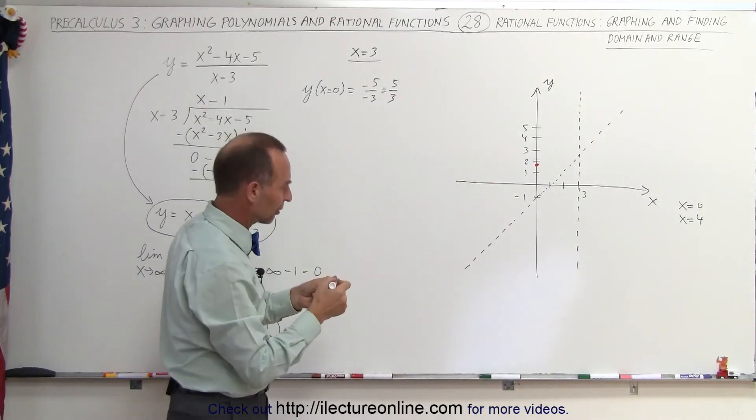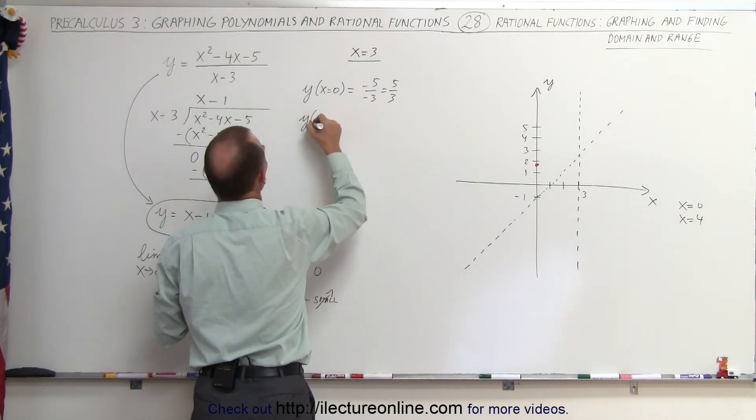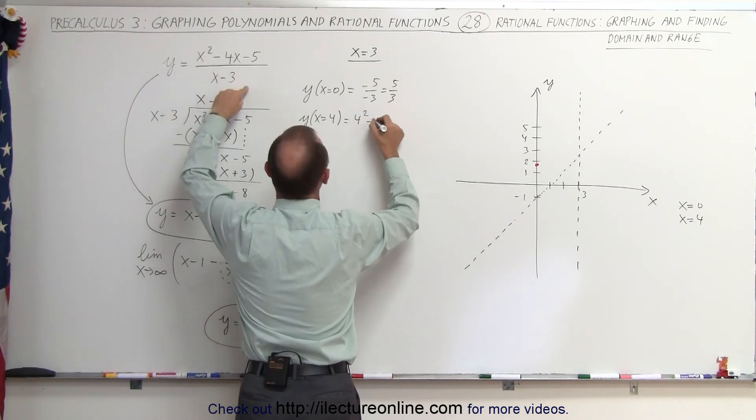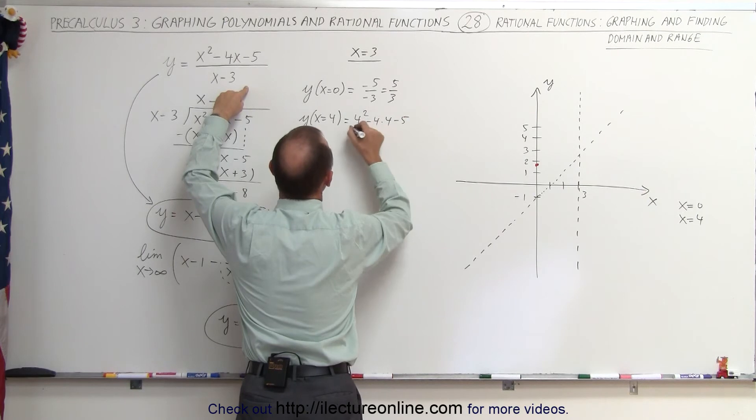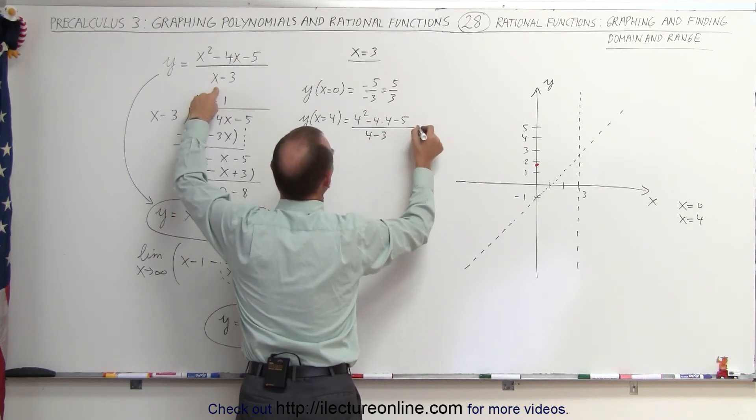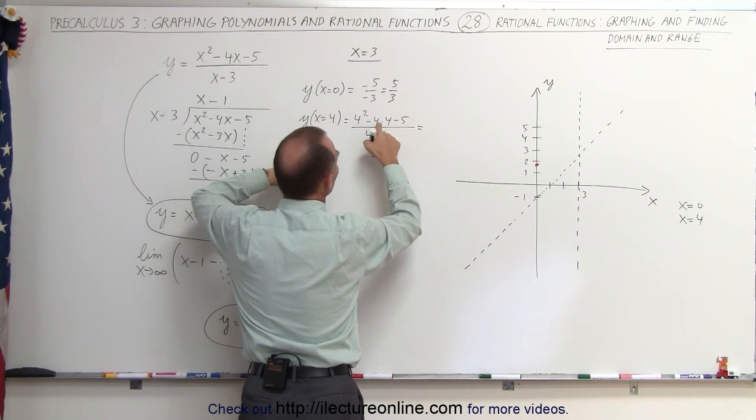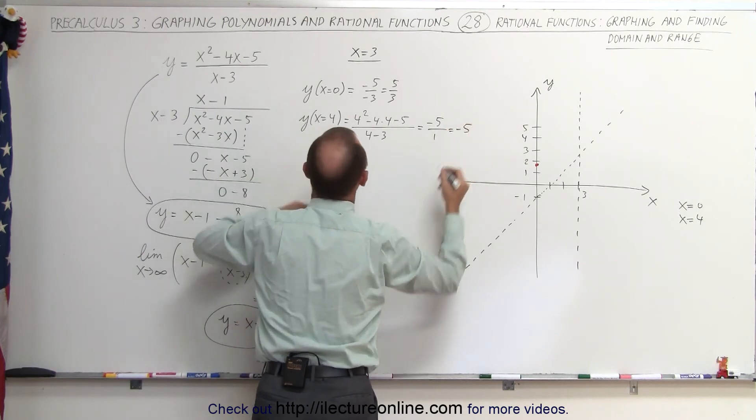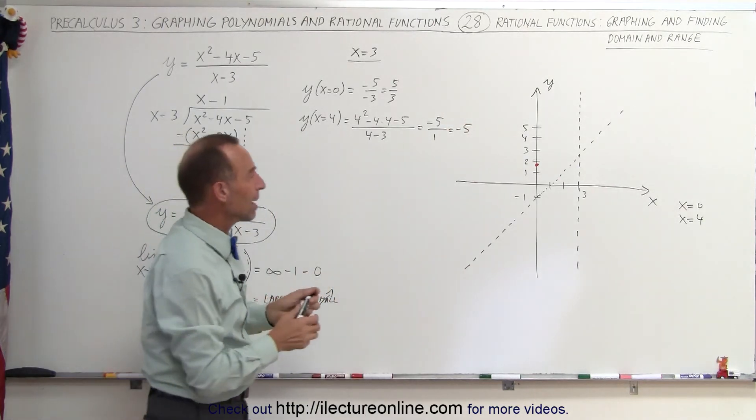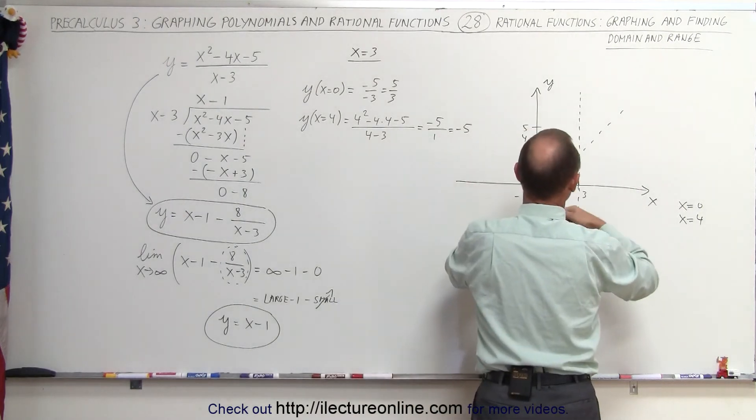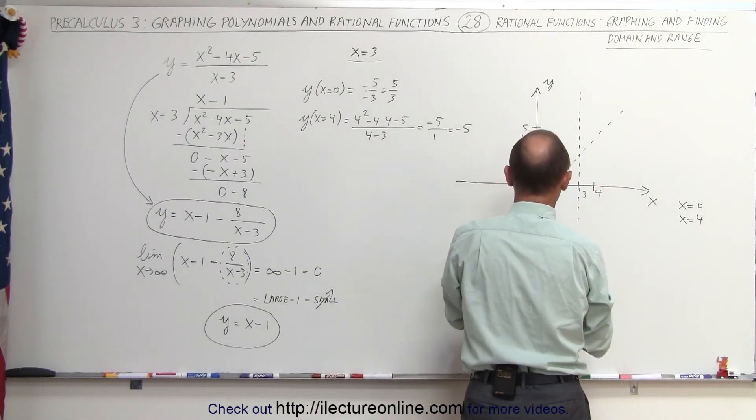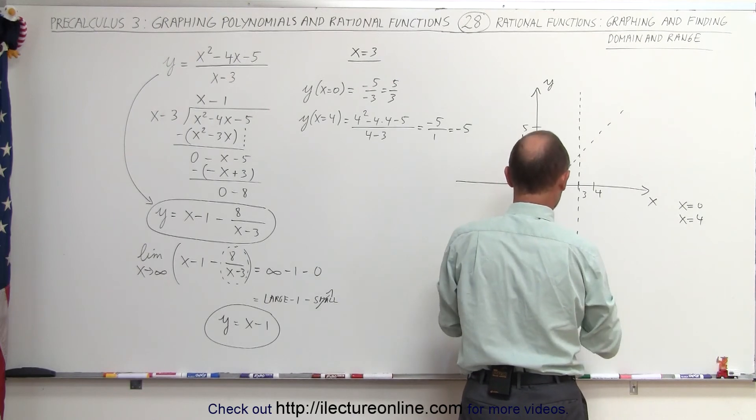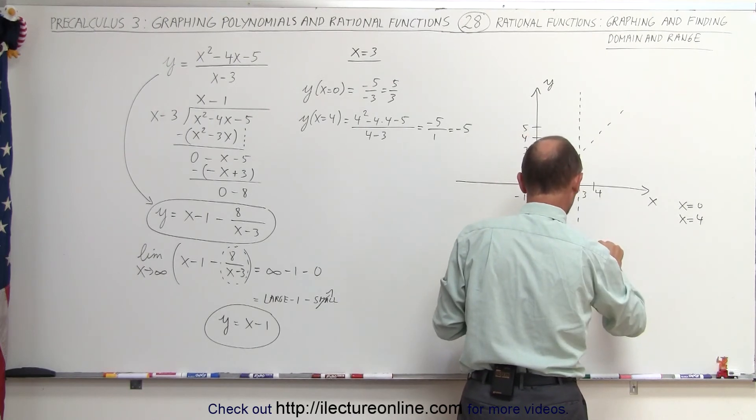How about on the right side of the vertical asymptote? We have y when x equals 4 is equal to 4 squared minus 4 times 4 minus 5 divided by 4 minus 3. That would be 16 minus 16, that's 0, minus 5. That would be minus 5 divided by 1, so it would be minus 5. When x equals 4, y equals minus 5. So x equals 4 is right here, and y equals minus 5 would be down here somewhere. So that's the other point.